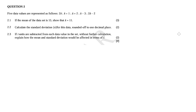First time looking at question 2.1, I noticed number patterns — this is paper two. The question gives data values in terms of k as follows: 2k is the first data set, k plus 1 is data set number two, k plus 2 is data set number three, k minus 3 is data set number four, and 2k minus 2 is data set number five. If the mean of the data set is 15, show that k is equal to 11.